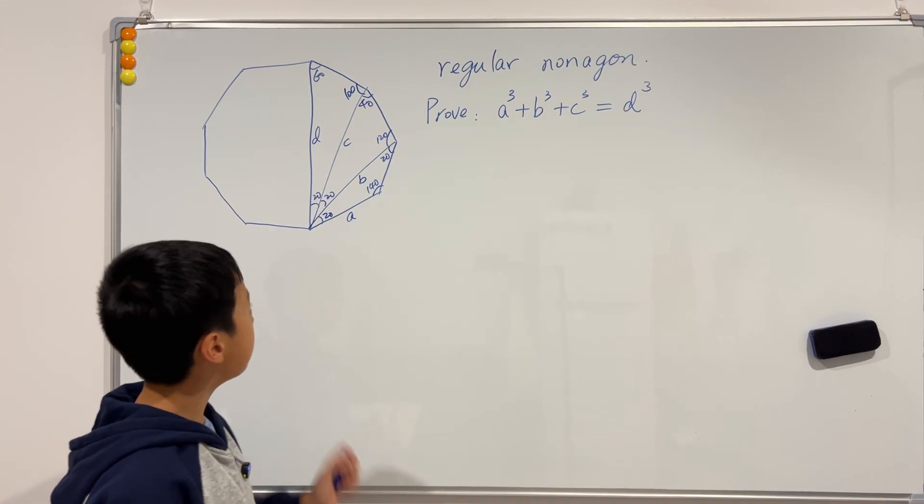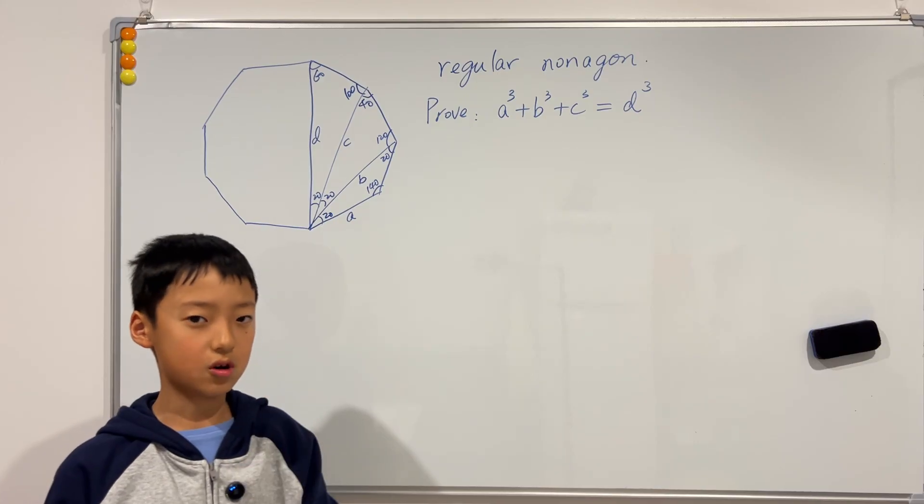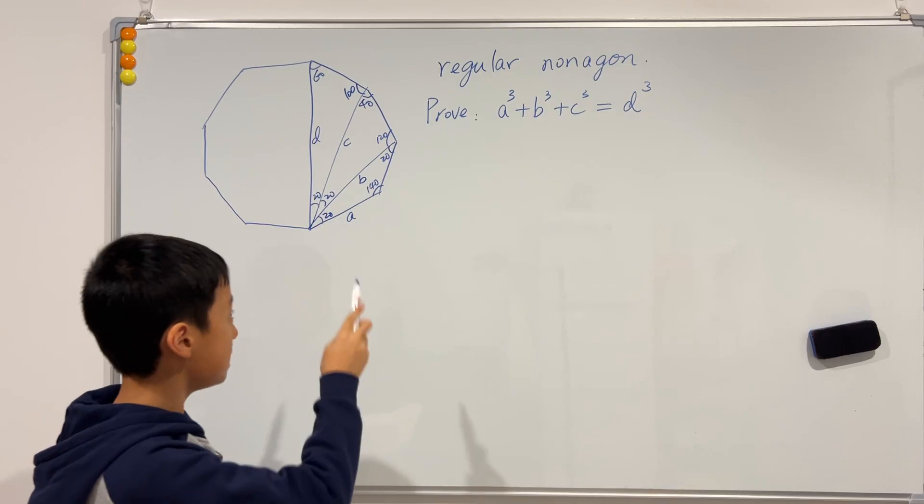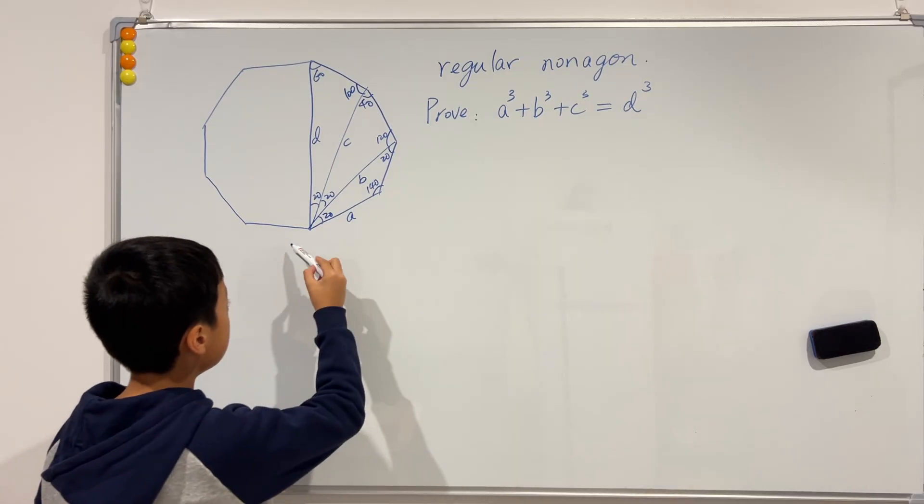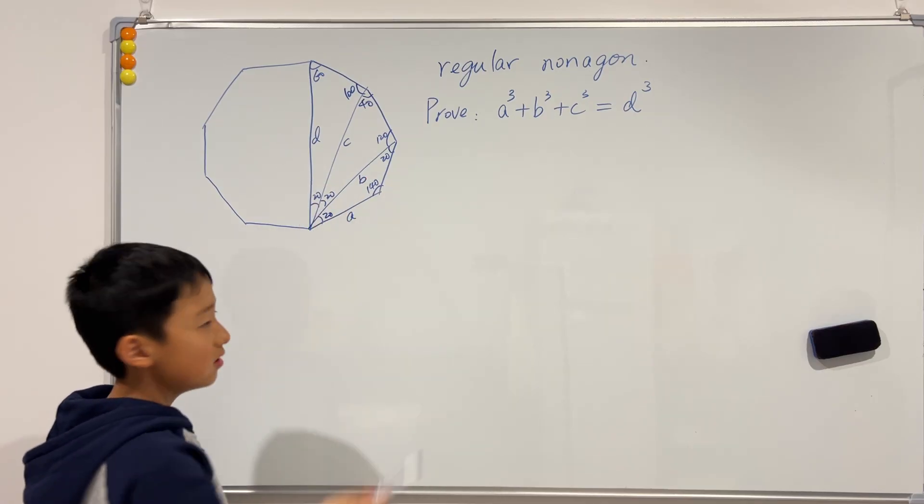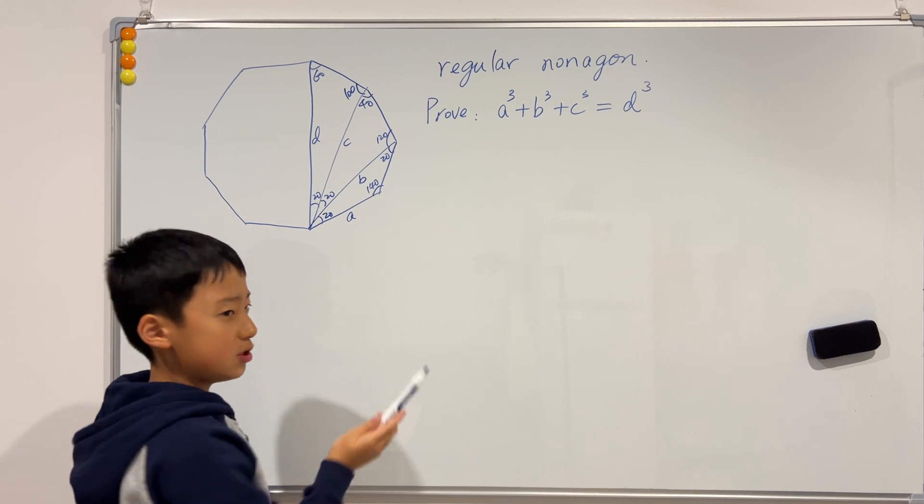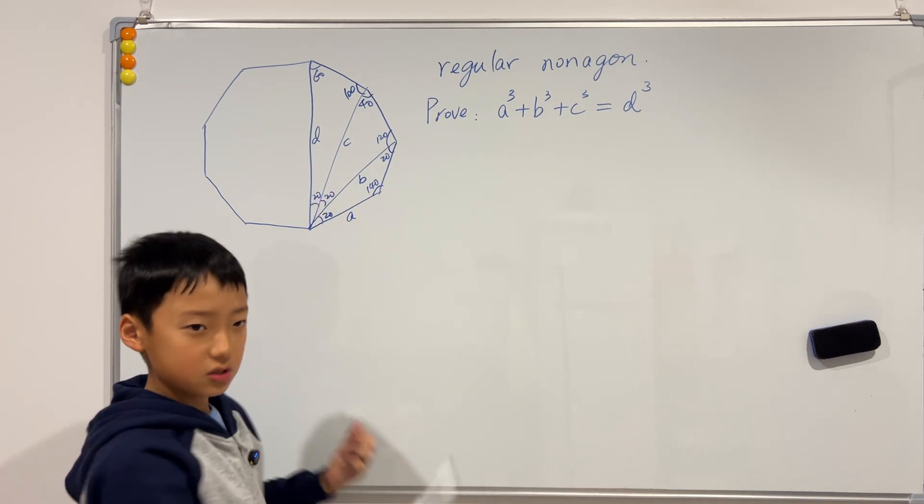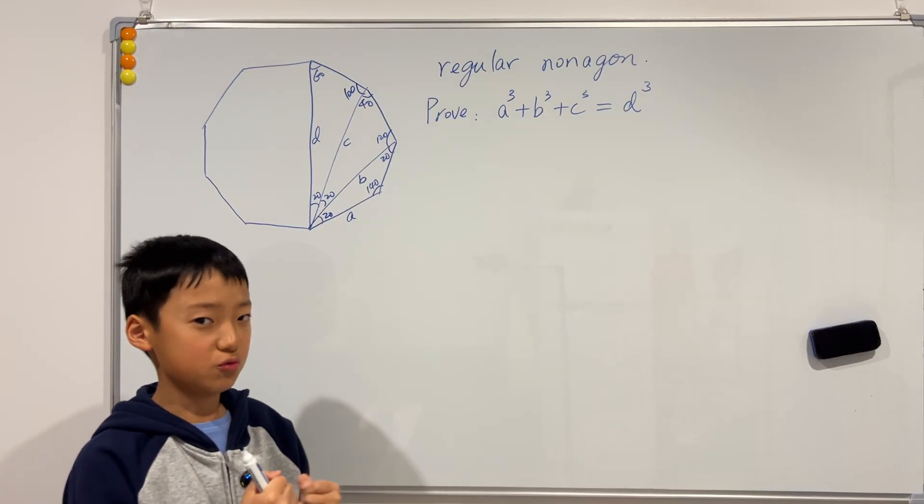Well on the board we have a regular nonagon which means it's a regular nine-sided polygon. And we have to prove that a cube plus b cube plus c cube equals d cube, and I've already written a, b, c, and d. If you try this on your own, these angles are actually pretty easy to calculate yourself because these are just chords of a circle. Okay, so I'll just get into the real proving.